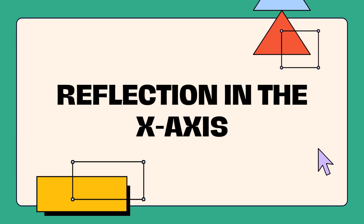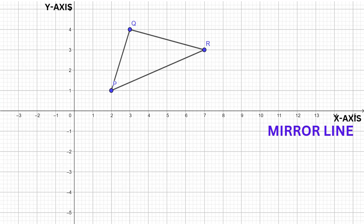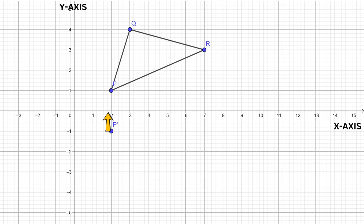Let's do another example. This time we will reflect a shape in the x-axis, so the x-axis is now our mirror line. Notice the point P is one unit away from the x-axis. That means the image of point P will also be one unit away from the x-axis on the other side. The point Q is four units away from the x-axis.